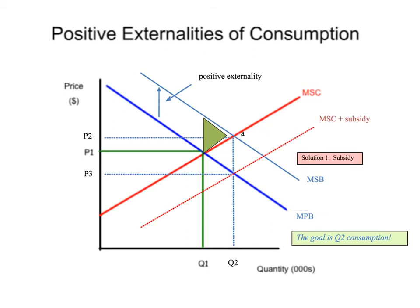Here's one solution: they could create a subsidy, which would push the marginal social cost curve outward by the amount of the subsidy. As a result, it's going to create a situation where Q2 is consumed. So they had Q1, P1 being consumed in the marketplace, and now the government wants Q2. If they subsidize healthcare, more people will benefit from that subsidy and healthcare consumption will go out to Q2. That is solution one — a subsidy to healthcare providers around the nation.